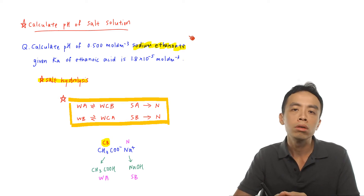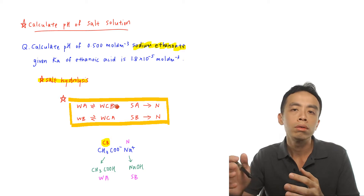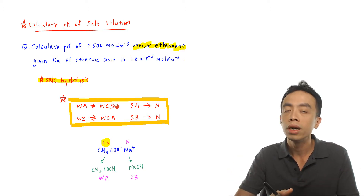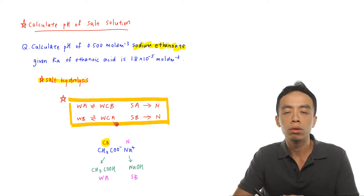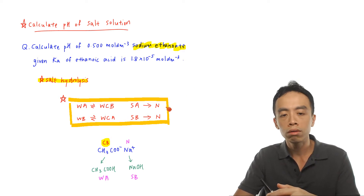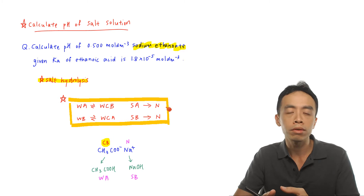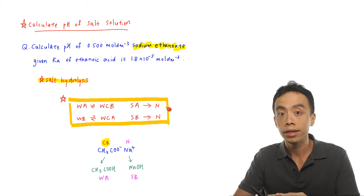We need the concept involving conjugate acids and conjugate bases. The dissociation of a weak acid will always give a weak conjugate base — so ethanoic acid, being a weak acid, dissociates to give the ethanoate ion as the weak conjugate base. A weak base gives a weak conjugate acid, for example ammonia gives NH₄⁺. For a strong acid, the counter ion formed is neutral — for example, HCl dissociates to H⁺ and Cl⁻, and Cl⁻ has no tendency to reform HCl, so it is neutral.